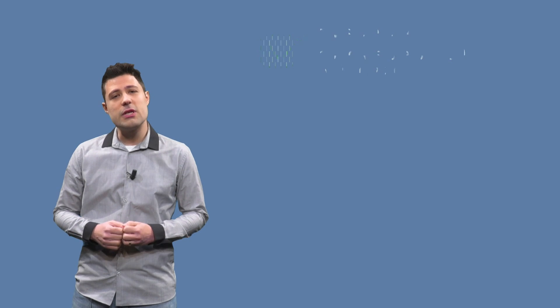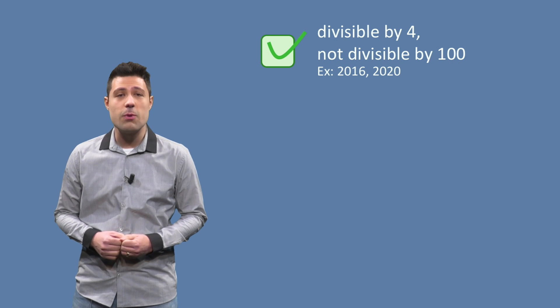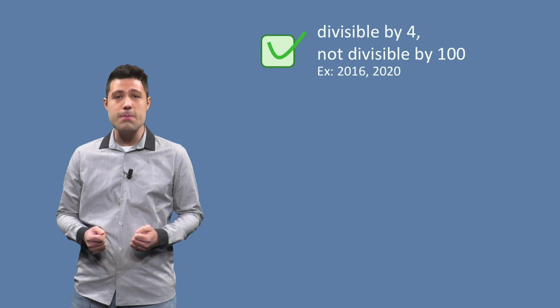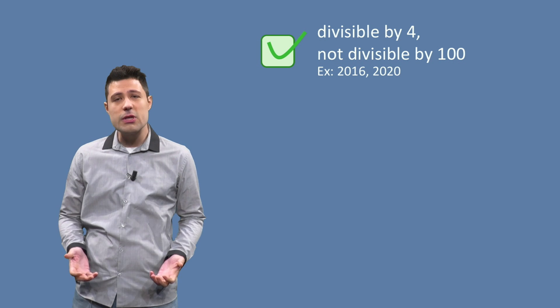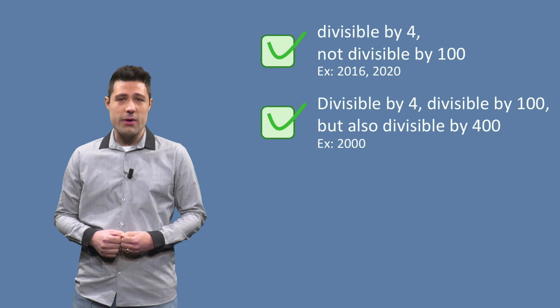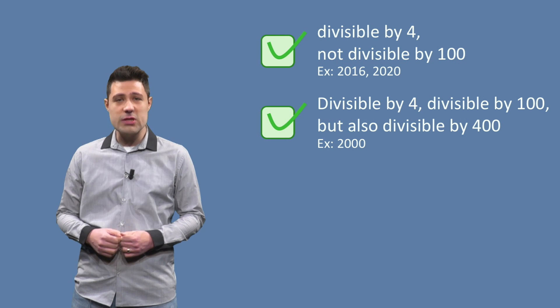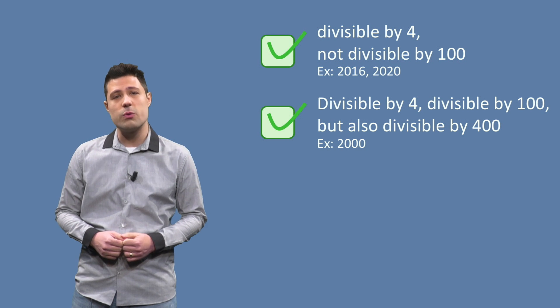But before doing this, let's remember the partitions we created. We had the first partition, which are numbers divisible by 4 and not divisible by 100 — for this one, the program must return true. The next partition is years that are divisible by 4, divisible by 100, and also divisible by 400 — the program should also return true.